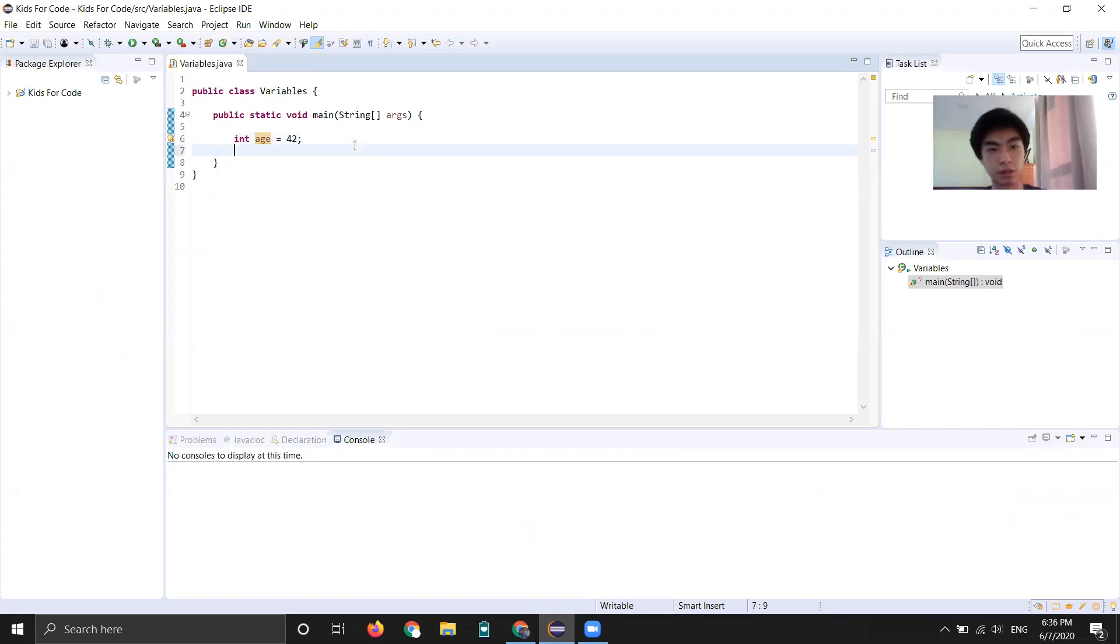So now if I wanted to create a double, double, say price equals 4.99. And so we got double, right? That is a type name, and then the actual value, which is a decimal, which is what doubles store.